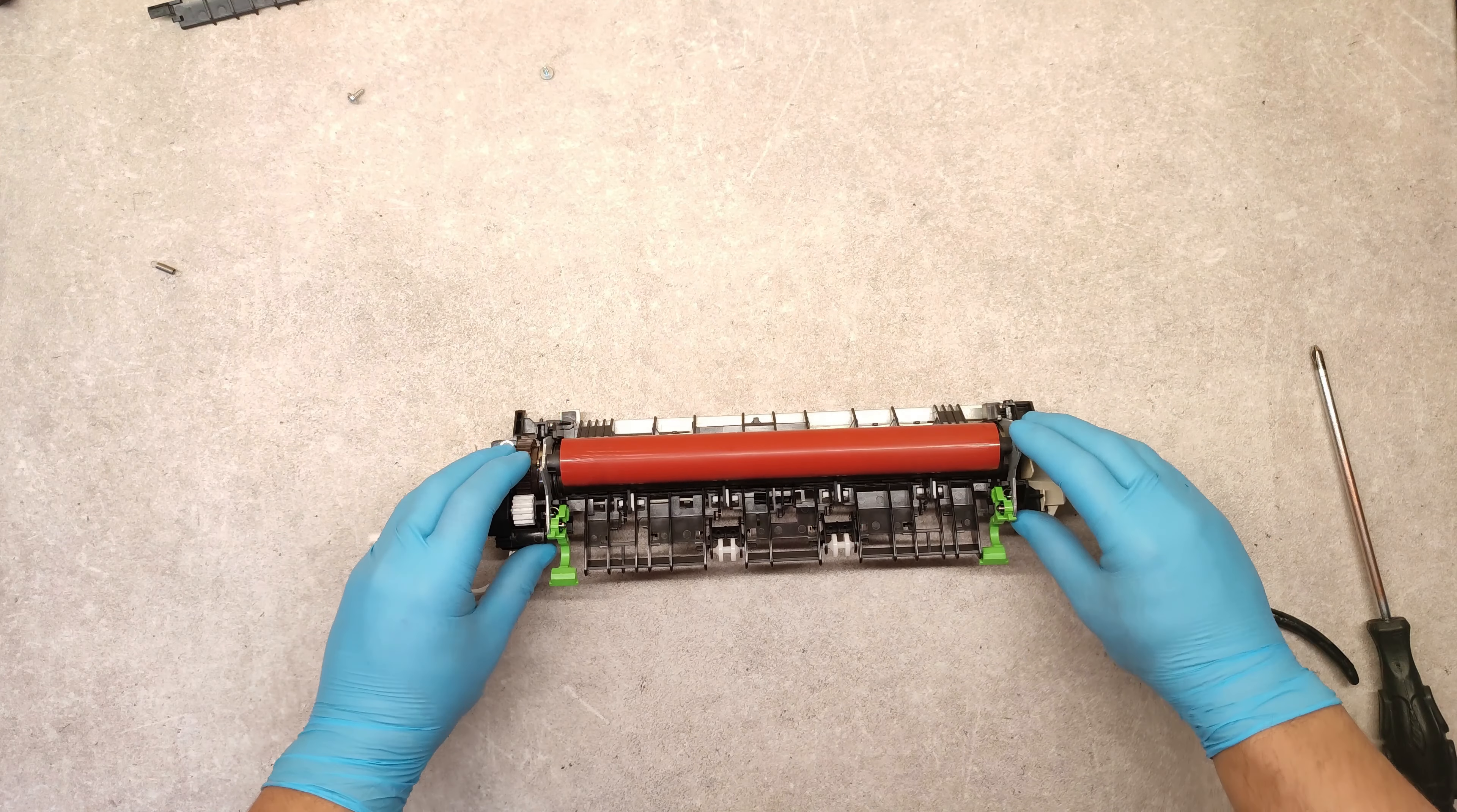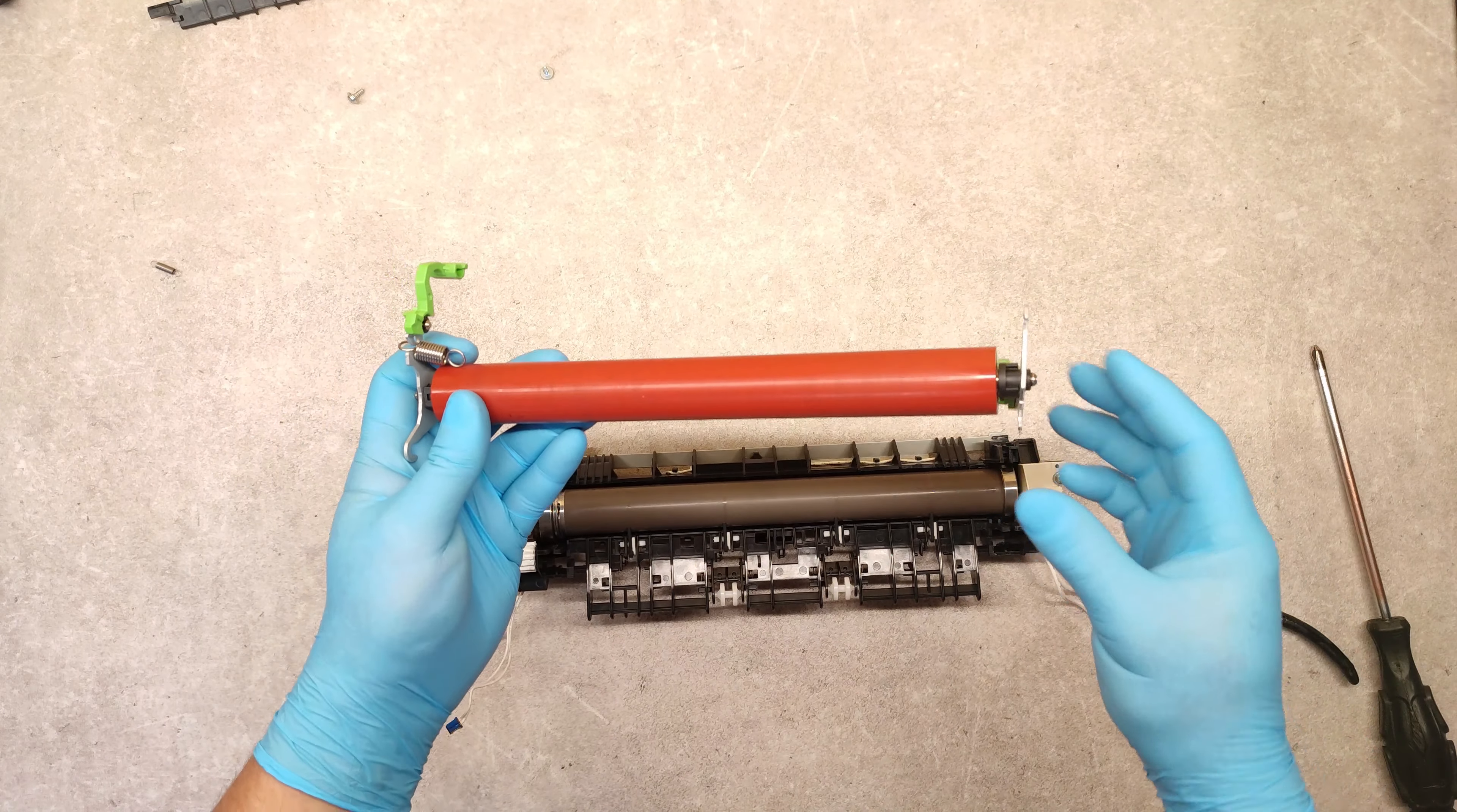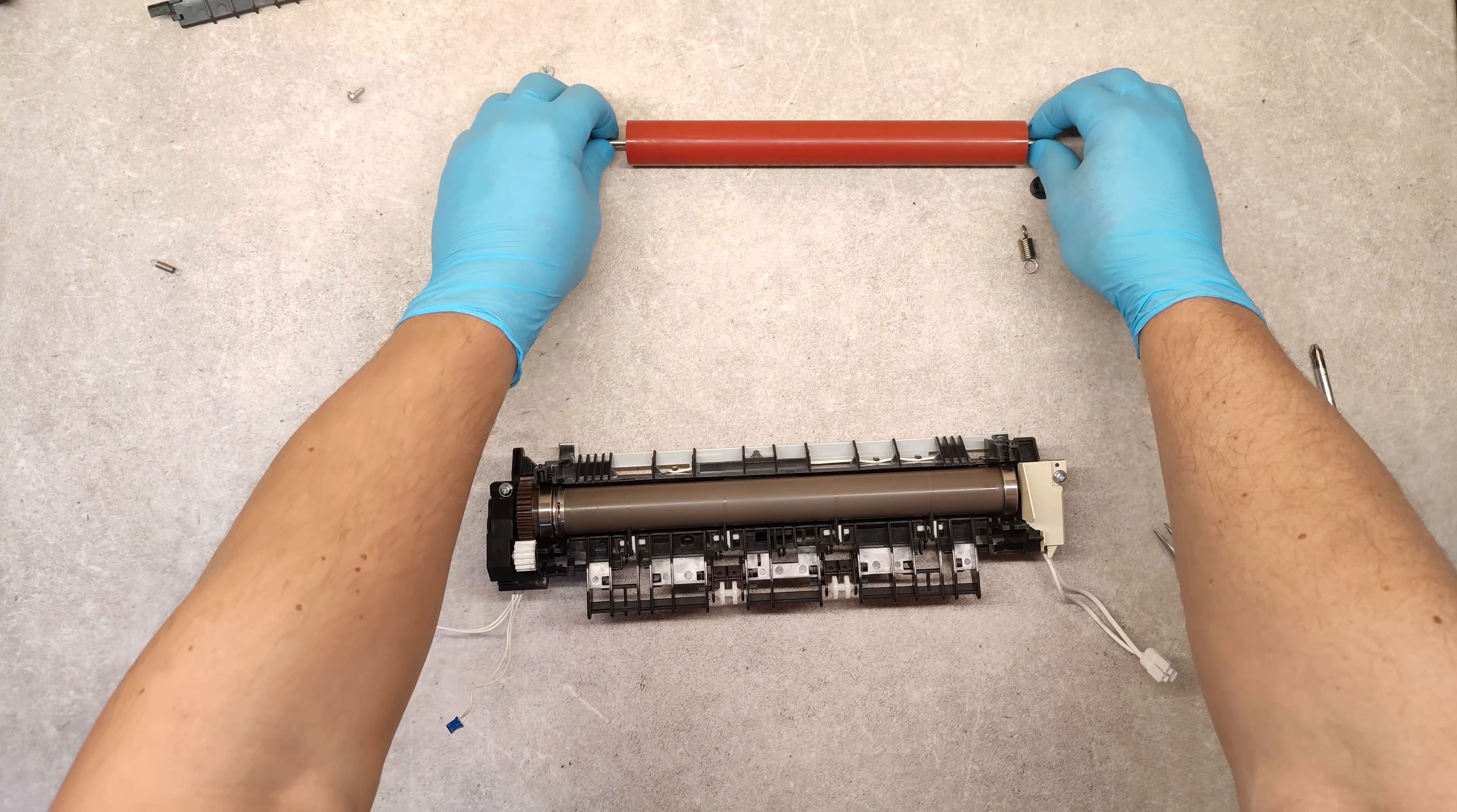These springs hold these metal hooks here. Remove these hooks. Remove these bushings, also on the other side. This is our LPR.